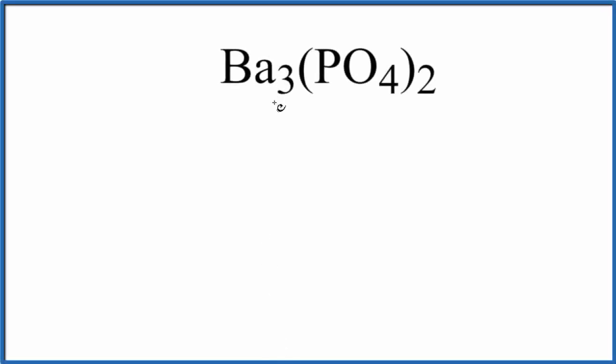In this video, we'll find the number of atoms in Ba3(PO4)2. That's barium phosphate. Let's write the element symbols first. We have our barium, and then we have a phosphorus and an oxygen.